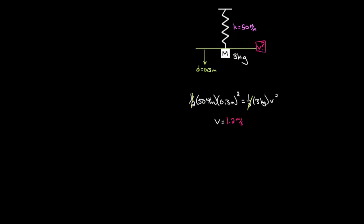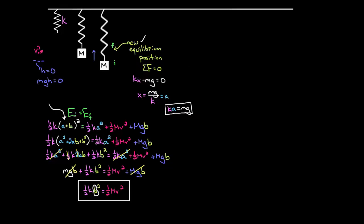To recap: even though it seems like vertical springs would be much harder than horizontal springs — because of gravitational forces and gravitational potential energy — if you measure the spring displacement from the new equilibrium position rather than the natural spring length, you can simply use conservation of energy without any mention of gravitational potential energy at all.